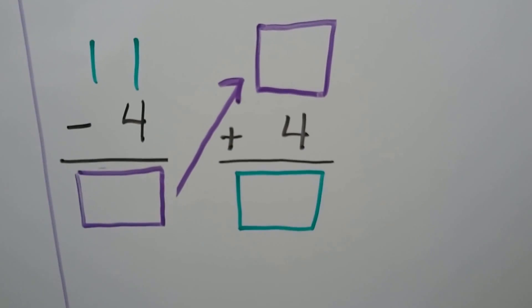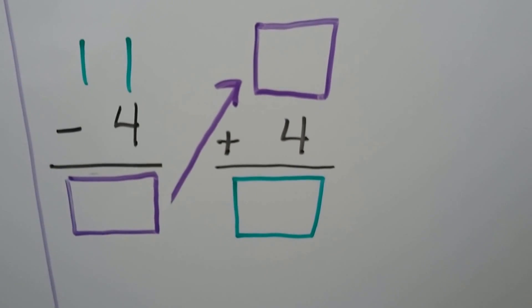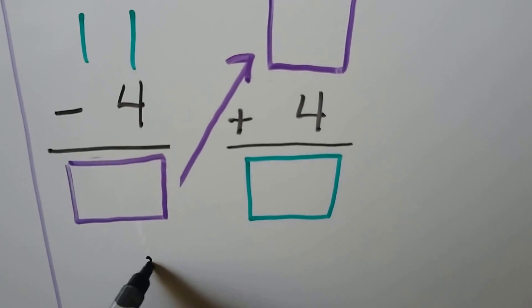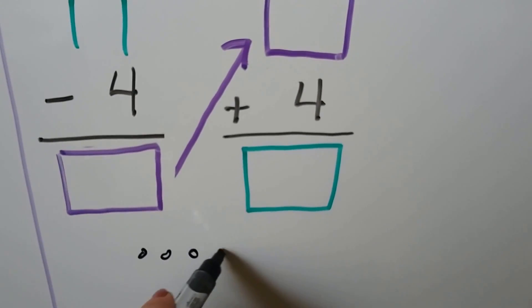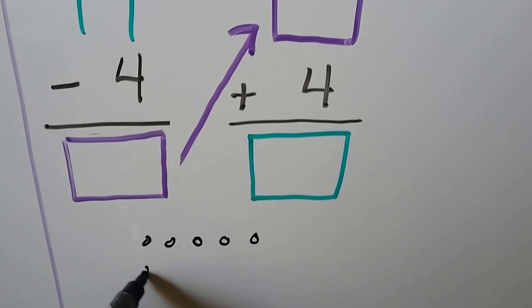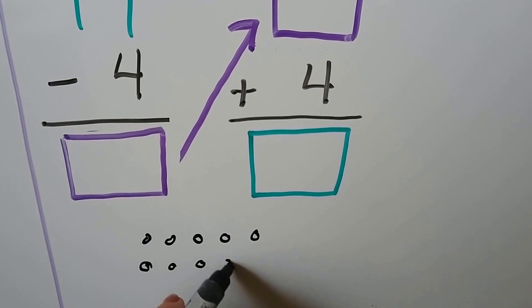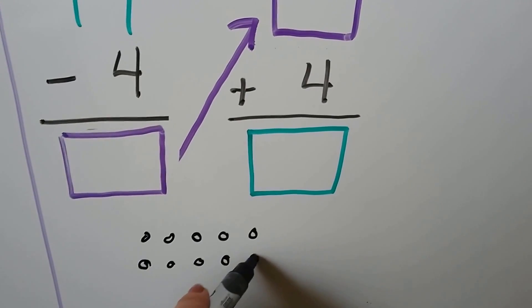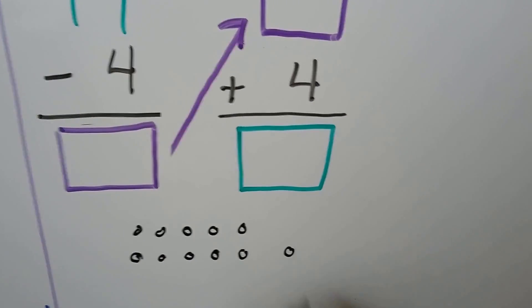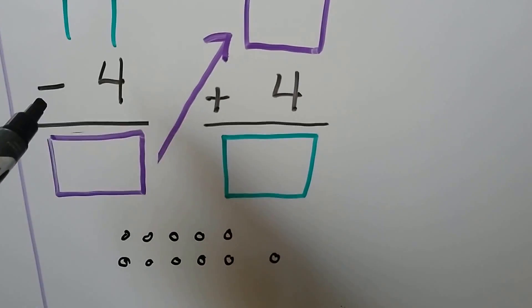Here we have eleven minus four. We can make counters — eleven total. We need to take away four.